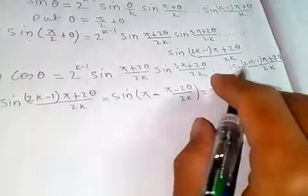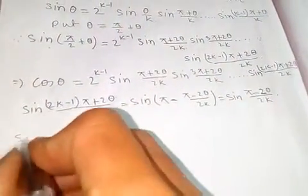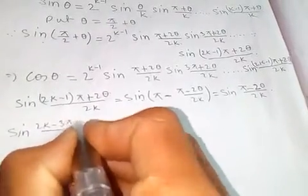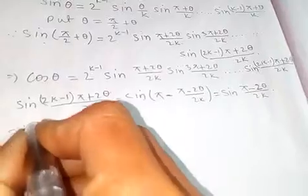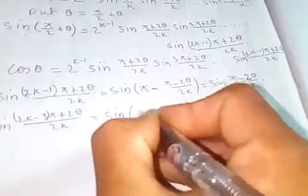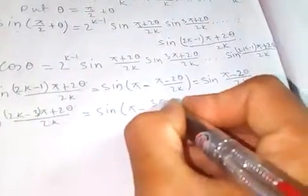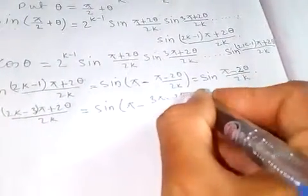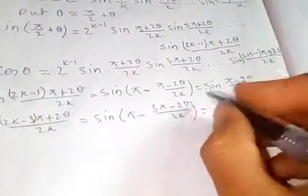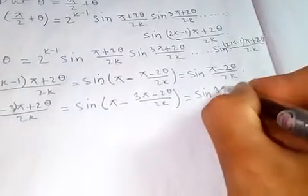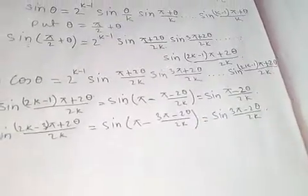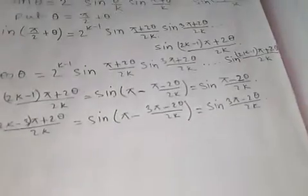The last but one factor, sine of 2k minus 3 times pi plus 2 theta over 2k, is equal to sine of pi minus (3 pi minus 2 theta over 2k), which means sine of pi minus this, giving sine of 3 pi minus 2 theta over 2k.